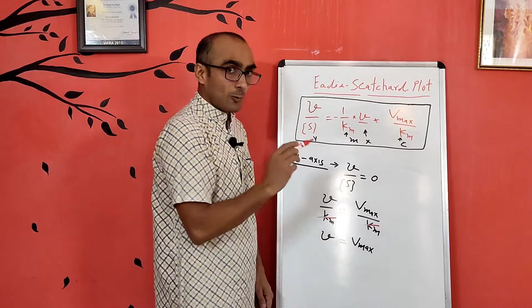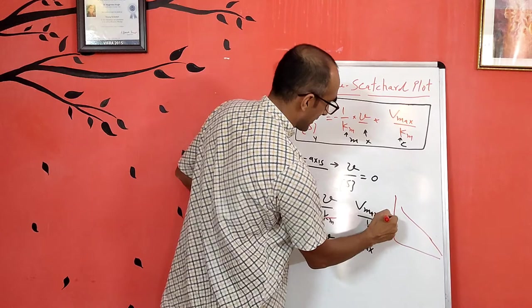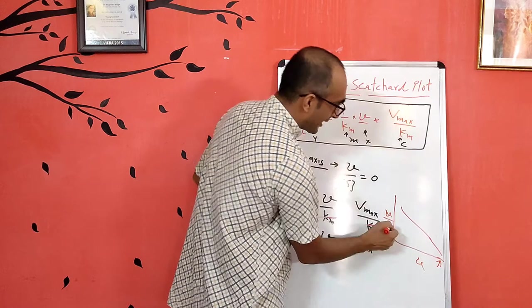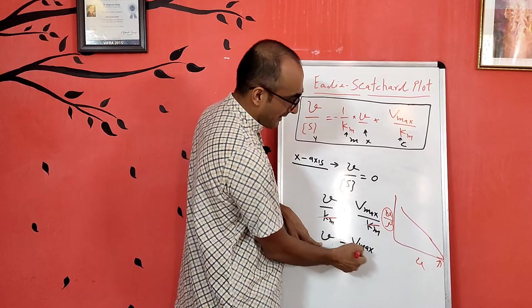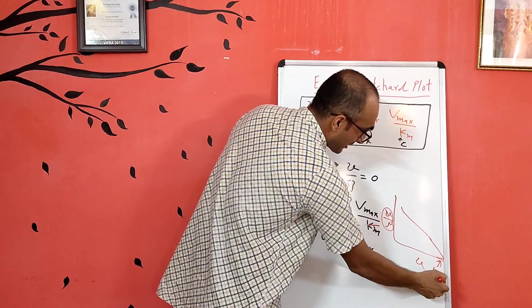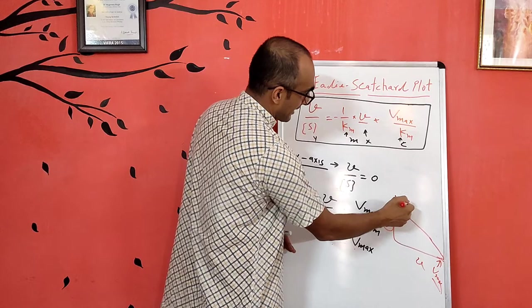Always remember this graph: the x-axis carries only v, and the y-axis carries v/S. When the value of v/S is 0 — that is, at the x-axis intercept — substituting into the Eadie-Scatchard equation gives v = Vmax. So the intercept on the x-axis is equal to Vmax, the maximum rate of the enzyme-catalyzed reaction.